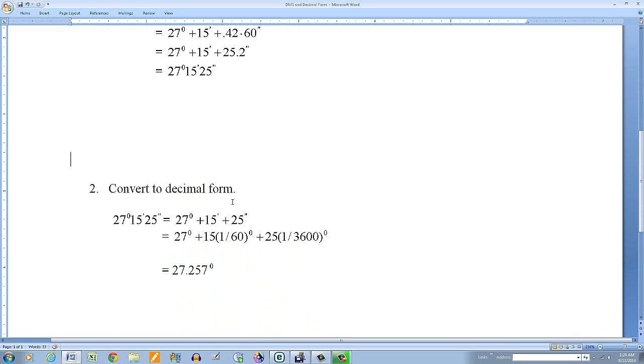Now let's go back the other way. Convert to decimal form. So now I'm just going to go the opposite. 27° 15' 25" equals... Let's break this up into 27° + 15' + 25".